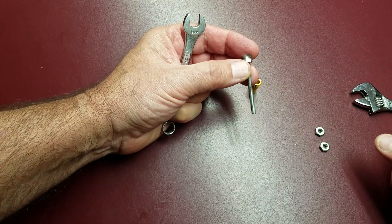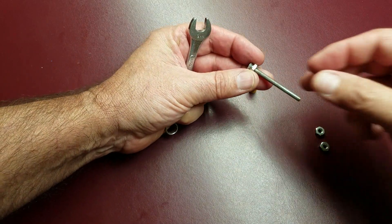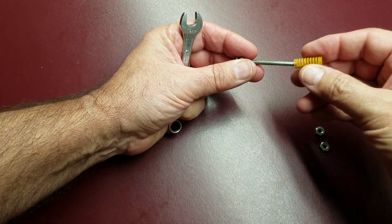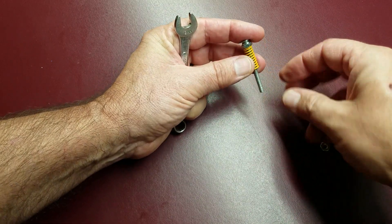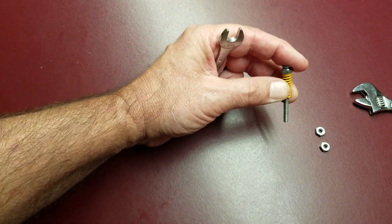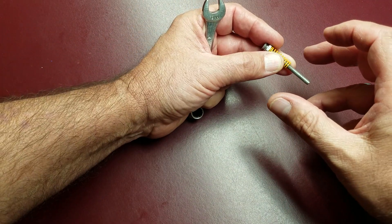So this will be protruding from the bottom of the bed, stationary, it won't turn now. So then you put your spring on, and then you drop it down through the carriage on the bed, and you put your adjusting nuts on.